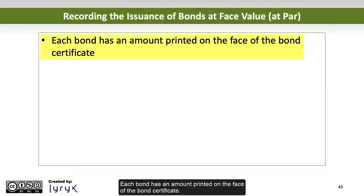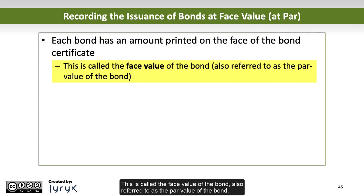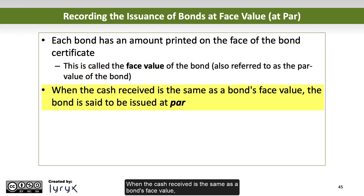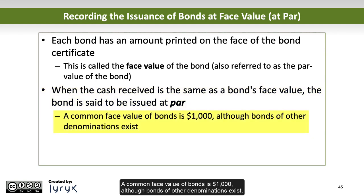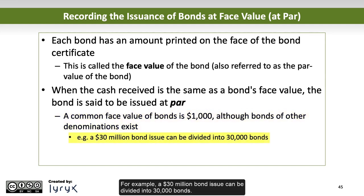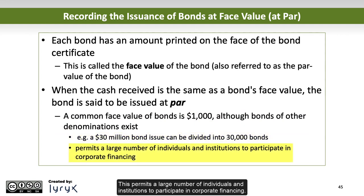Each bond has an amount printed on the face of the bond certificate. This is called the face value of the bond, also referred to as the par value of the bond. When the cash received is the same as a bond's face value, the bond is said to be issued at par. A common face value of bonds is $1,000, although bonds of other denominations exist. For example, the $30 million bond issue can be divided into 30,000 bonds, which permits a large number of individuals and institutions to participate in corporate financing.